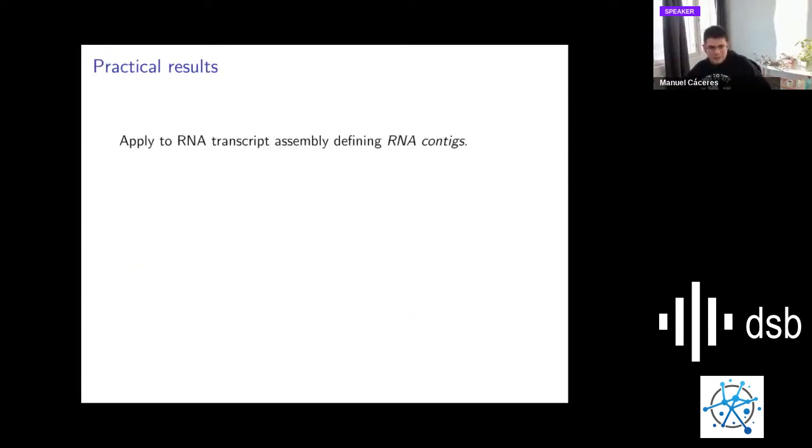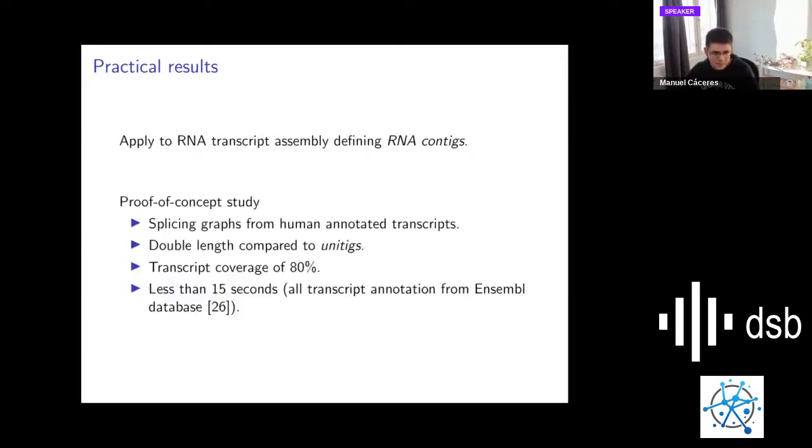In the practical side, we apply this framework for multi-assembly to the transcript assembly problem. We define something that we call RNA contigs in that context. We perform a proof-of-concept study with perfect data and known solutions. We build splicing graphs from human-annotated transcripts. We found that, compared to a simpler model, our RNA contigs are double in length. We also found that the transcript coverage is 80% by RNA contigs, and all of this runs in less than 15 seconds.